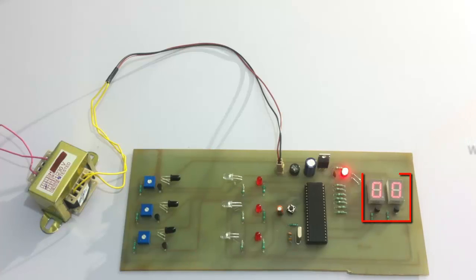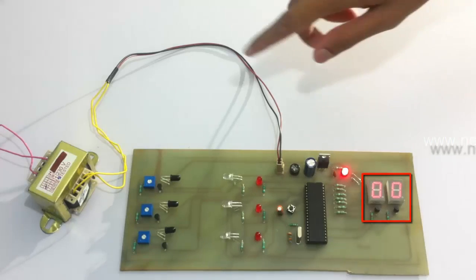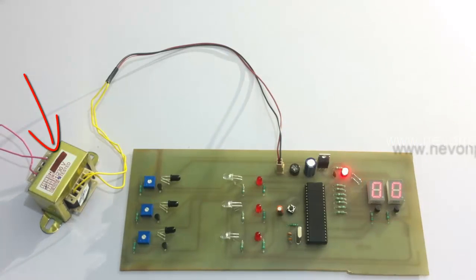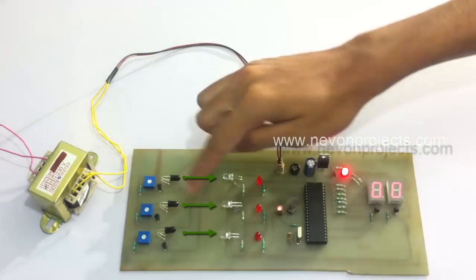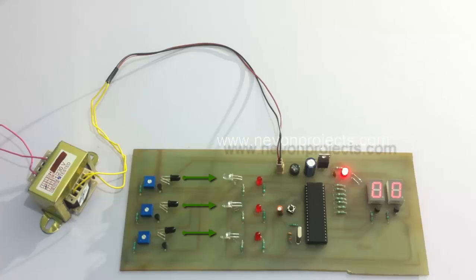The count is displayed on the seven segment display, and the entire system is powered by a 12-volt transformer. For this purpose, we use IR sensors here - this is the transmitter and this is the receiver.